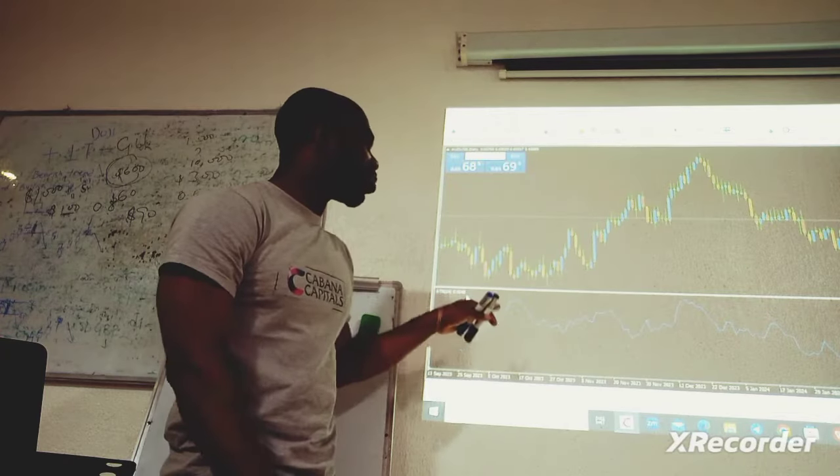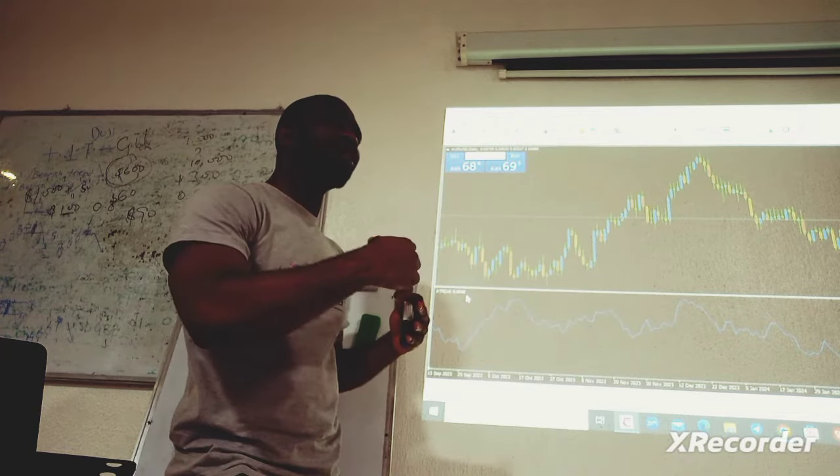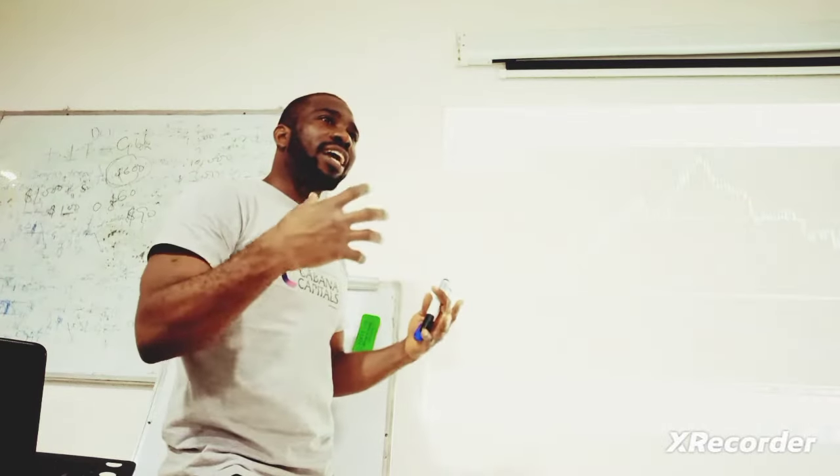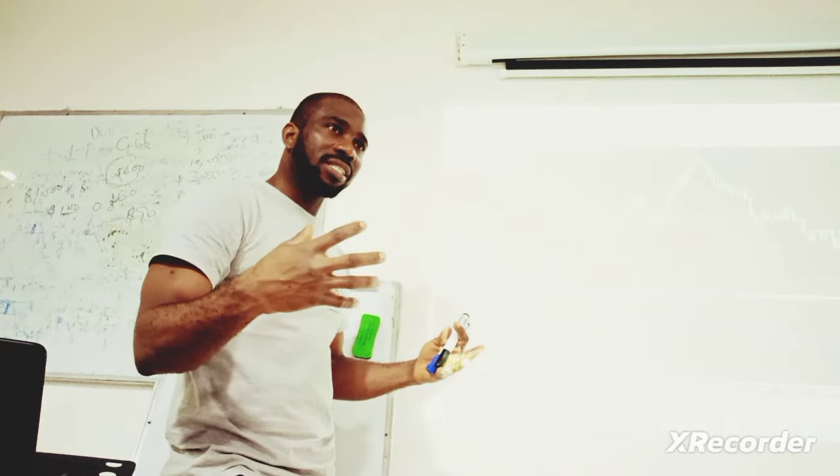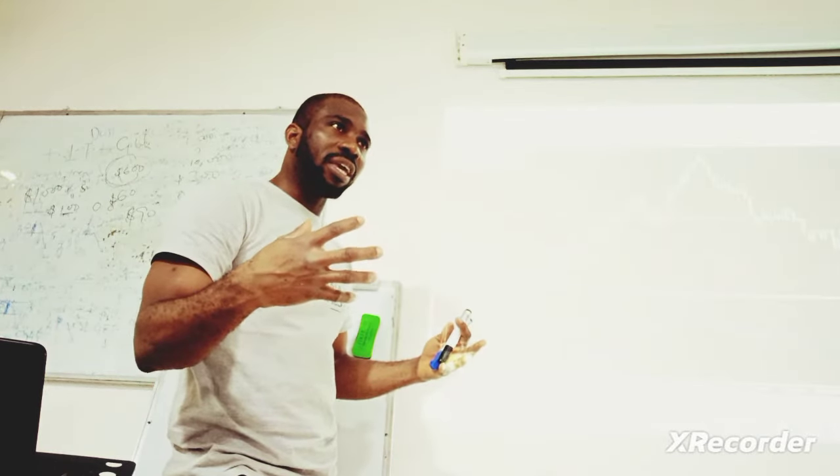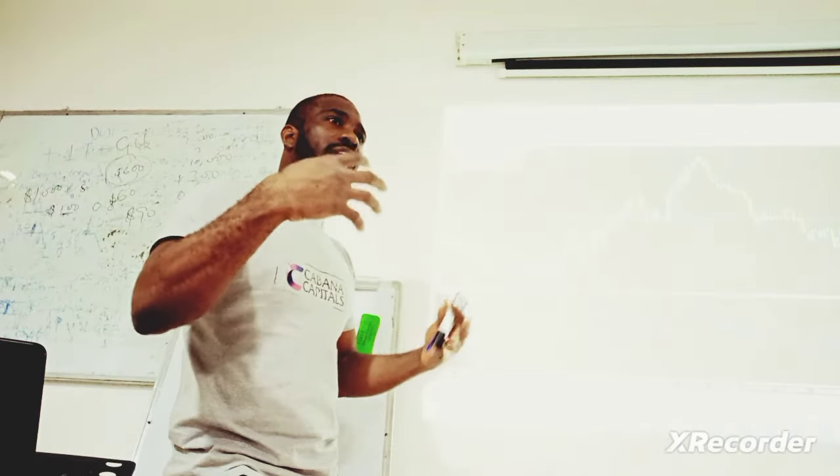Average True Range indicator is used to determine how volatile an instrument is. It is used to measure volatility.